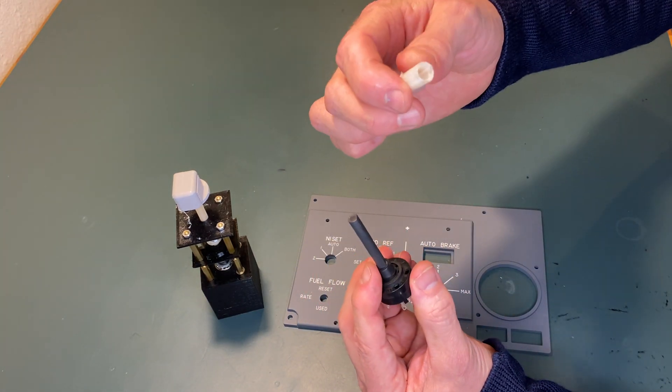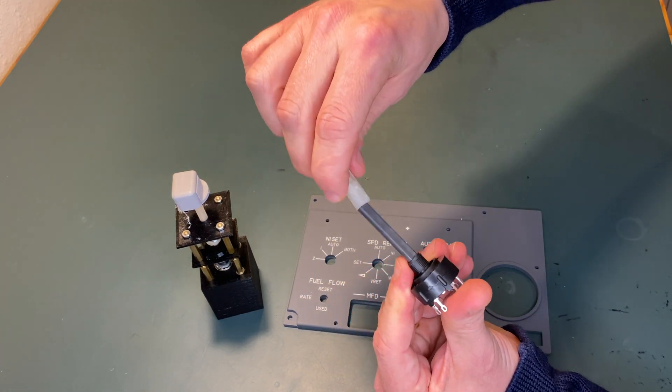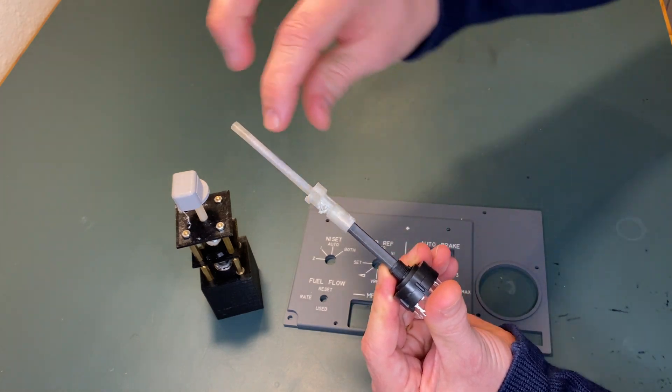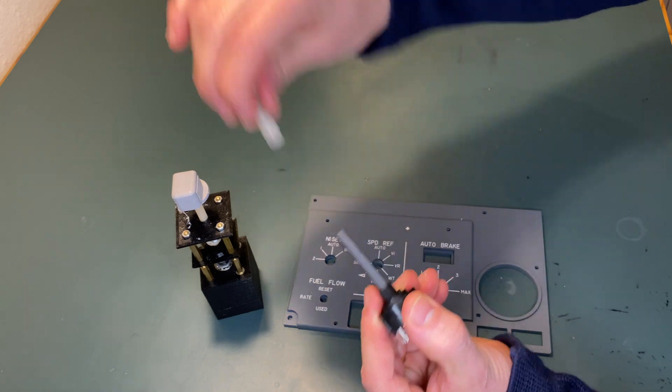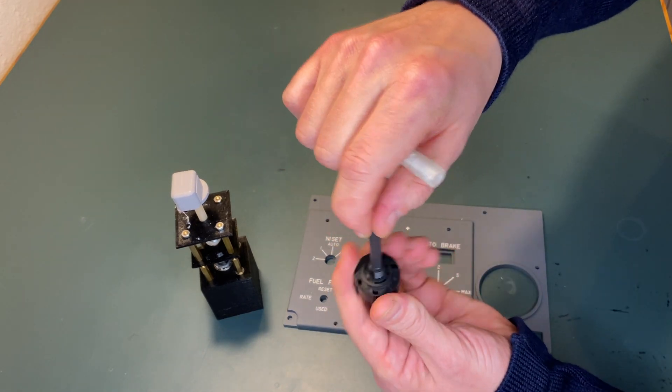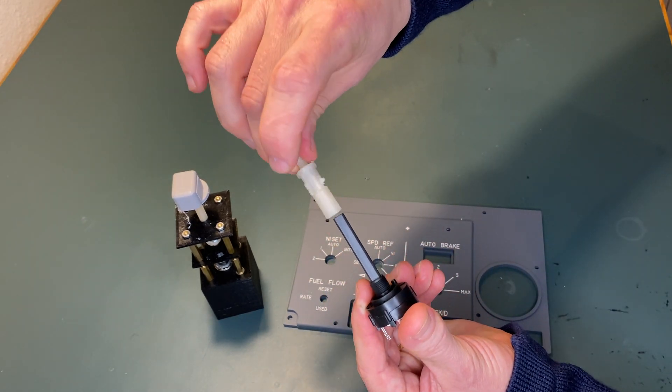When you print this part, it's D-shaped as well, and it's the flat part here that transfers the torque when you turn to the switch. If you have a round rotary switch, this would just spin around.